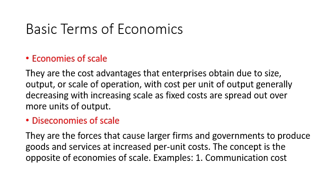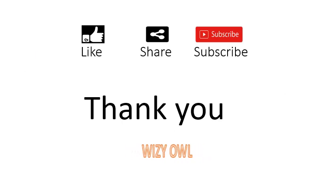Now let's look at some more economic terms. Economies of scale are the cost advantages that enterprises obtain due to size, output, or scale of operation, with cost per unit of output generally decreasing with increasing sales as fixed costs are spread over more units of output. Diseconomies of scale are the factors that cause large firms and governments to produce goods and services at an increased per unit cost, as this concept is the opposite of economies of scale.